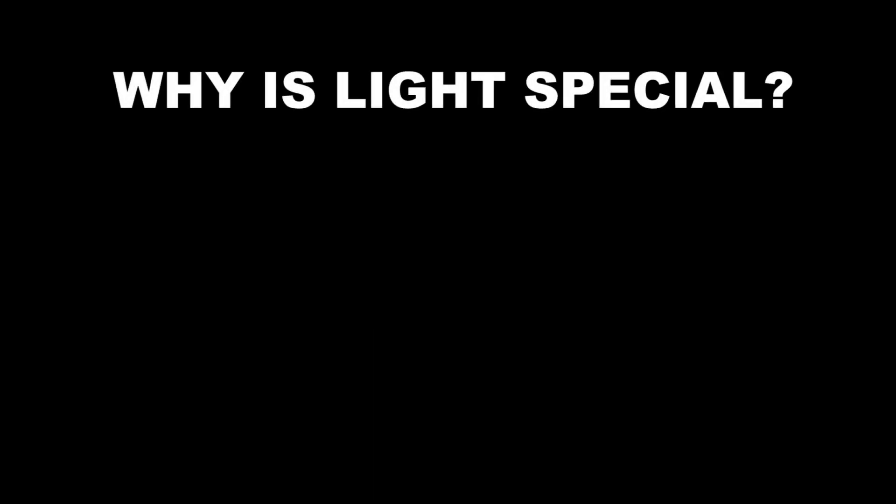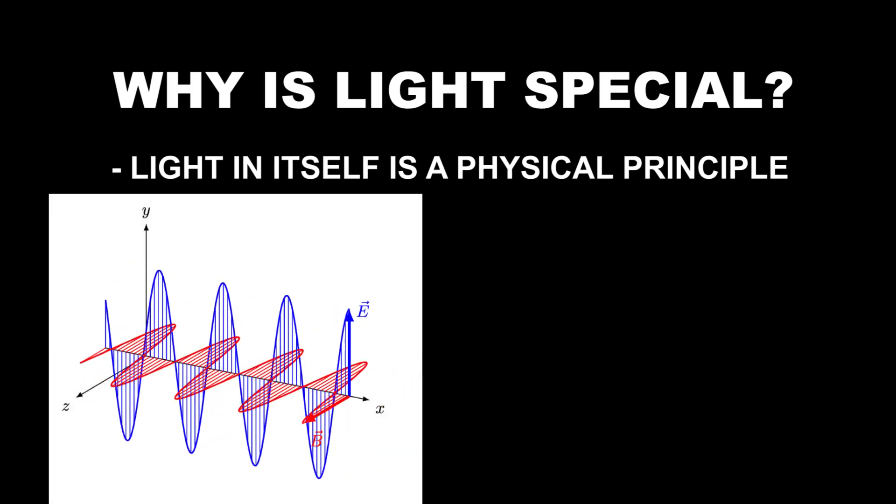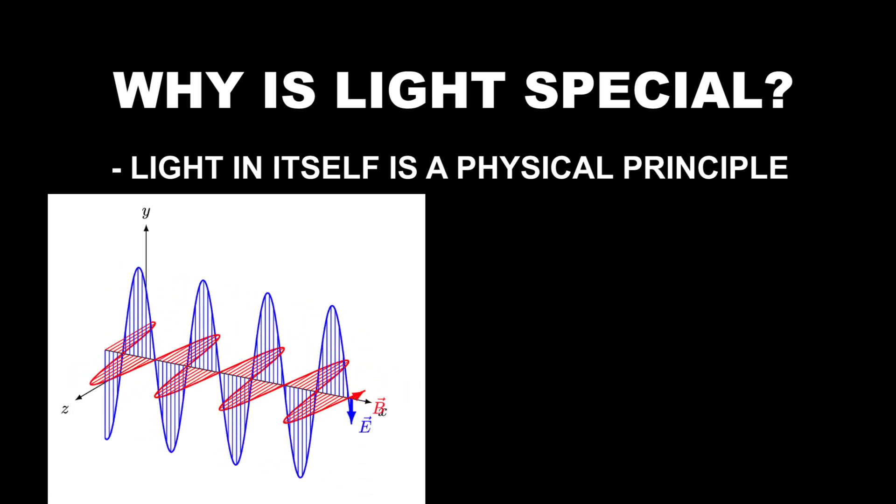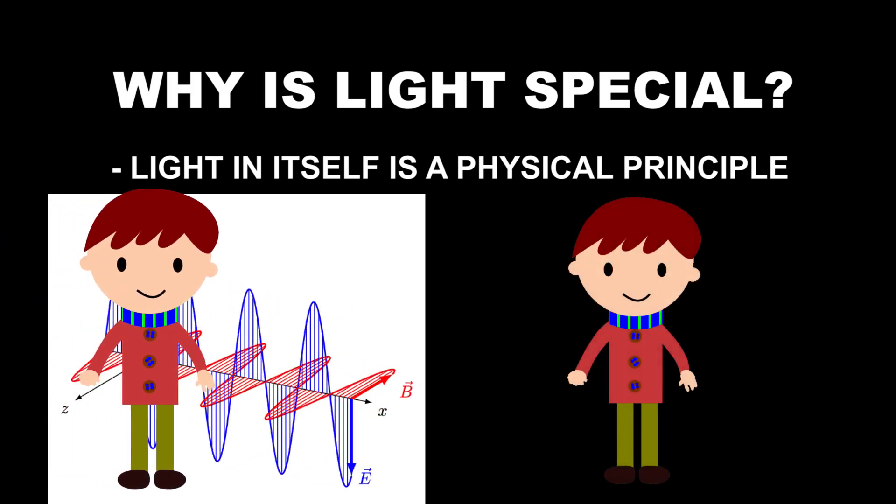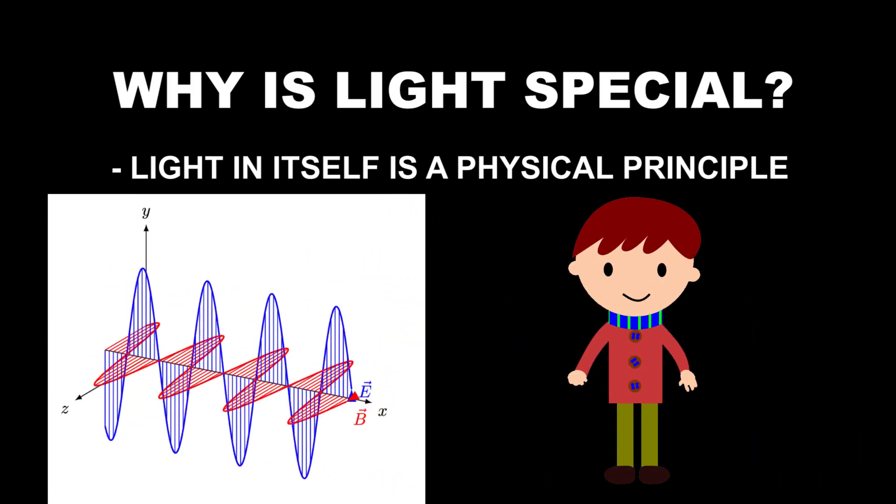Now, it's genuine to ask, what is so special about the velocity of light? The thing special about the velocity of light is that this is in itself a physical principle. The velocity is the result of electric field and magnetic field complementing each other in empty space. And this velocity will not change with the motion of your frame. This is a constant value.